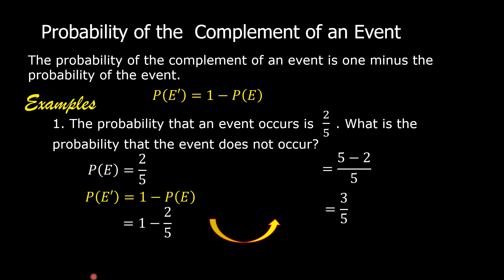So the probability of the complement of the event, or the probability that the event does not occur, is equal to 3 fifths.